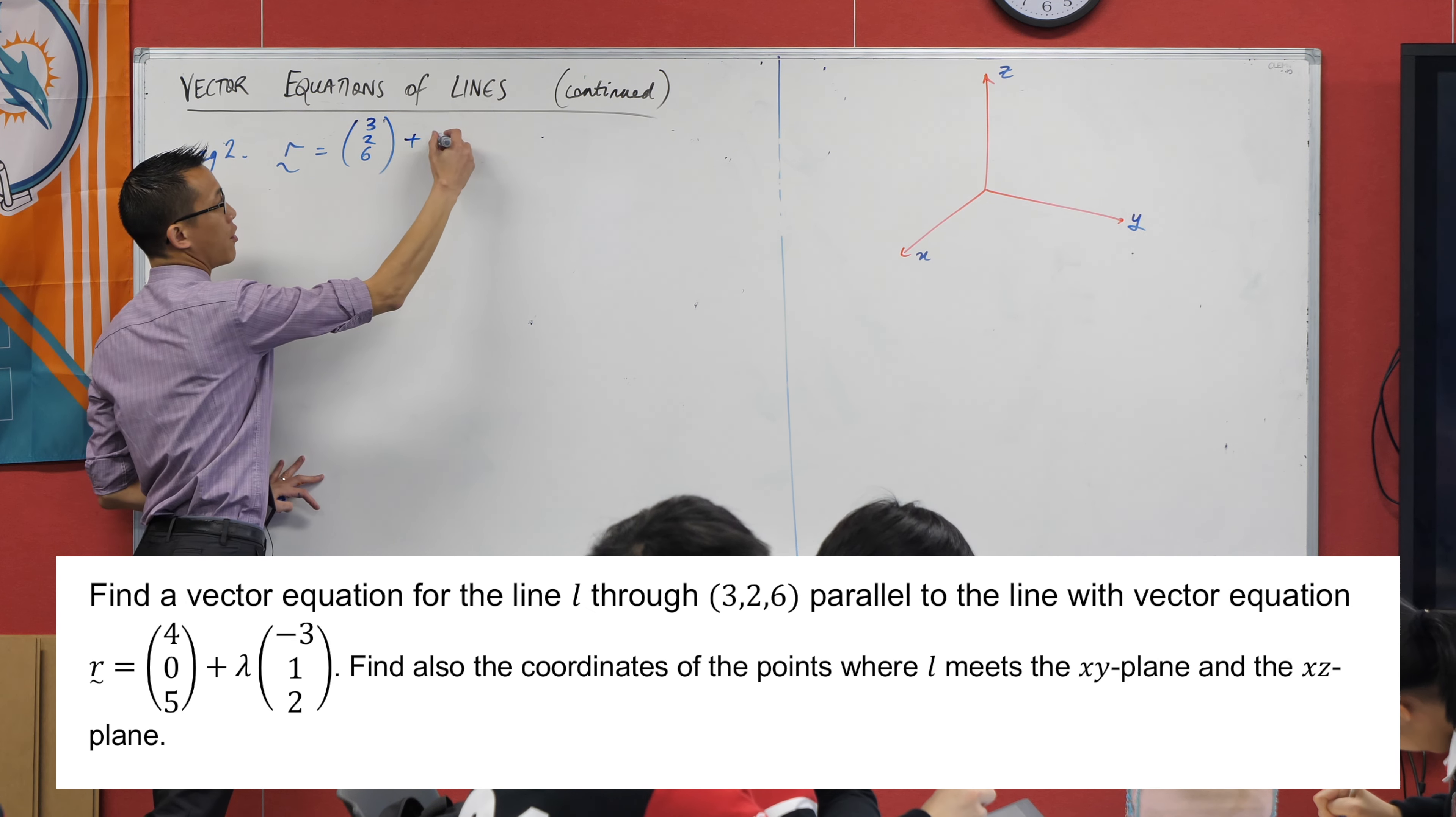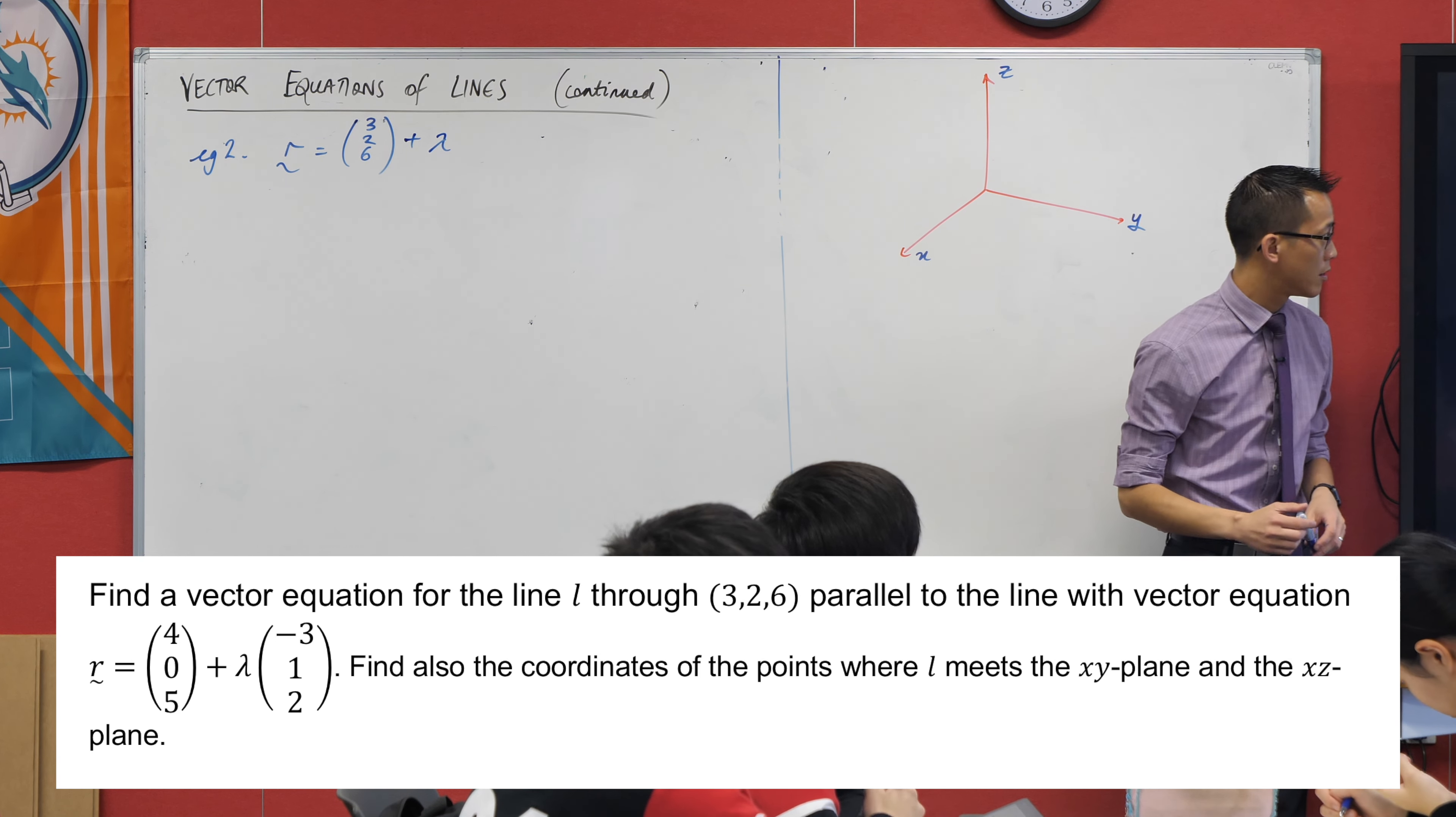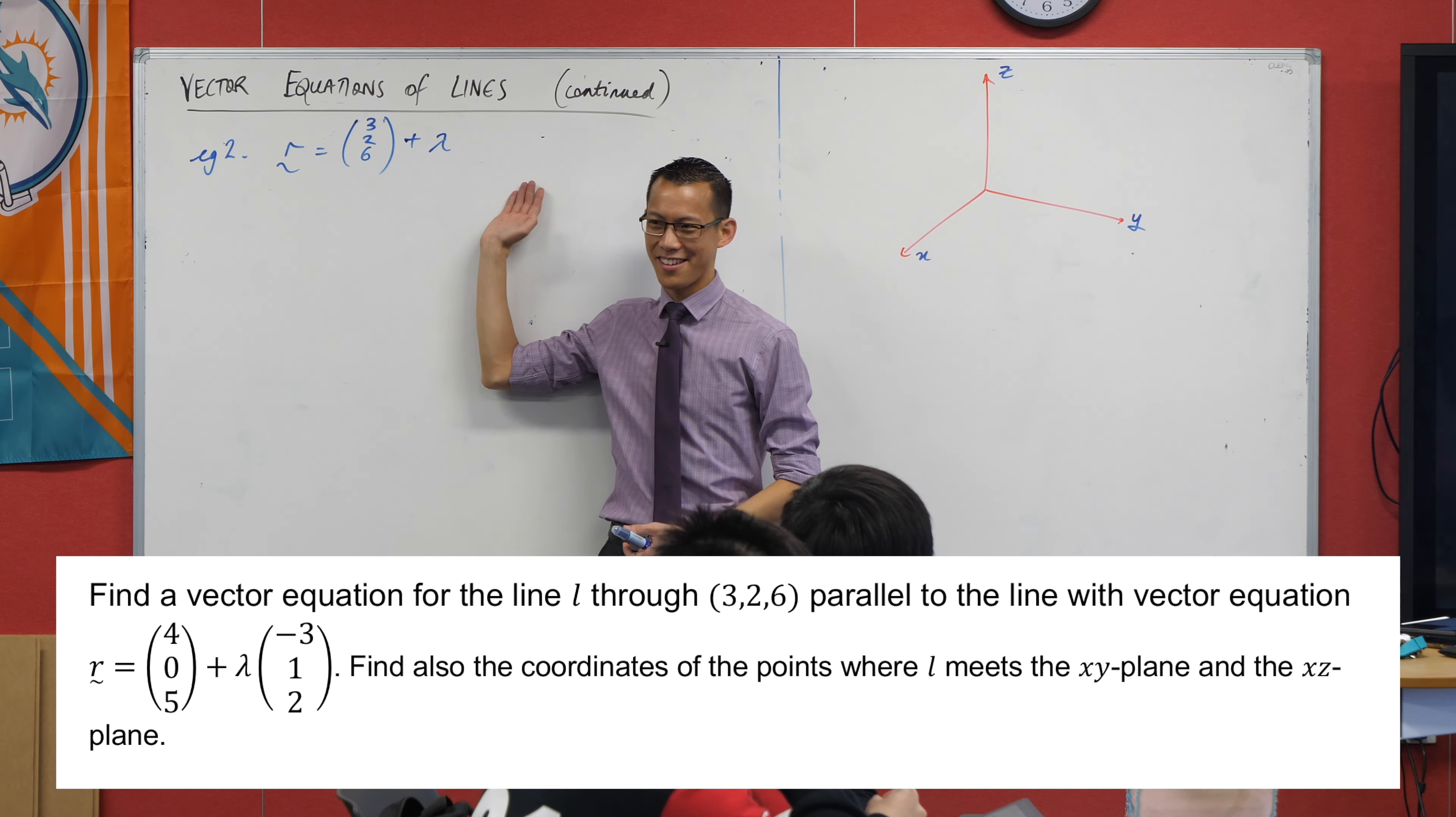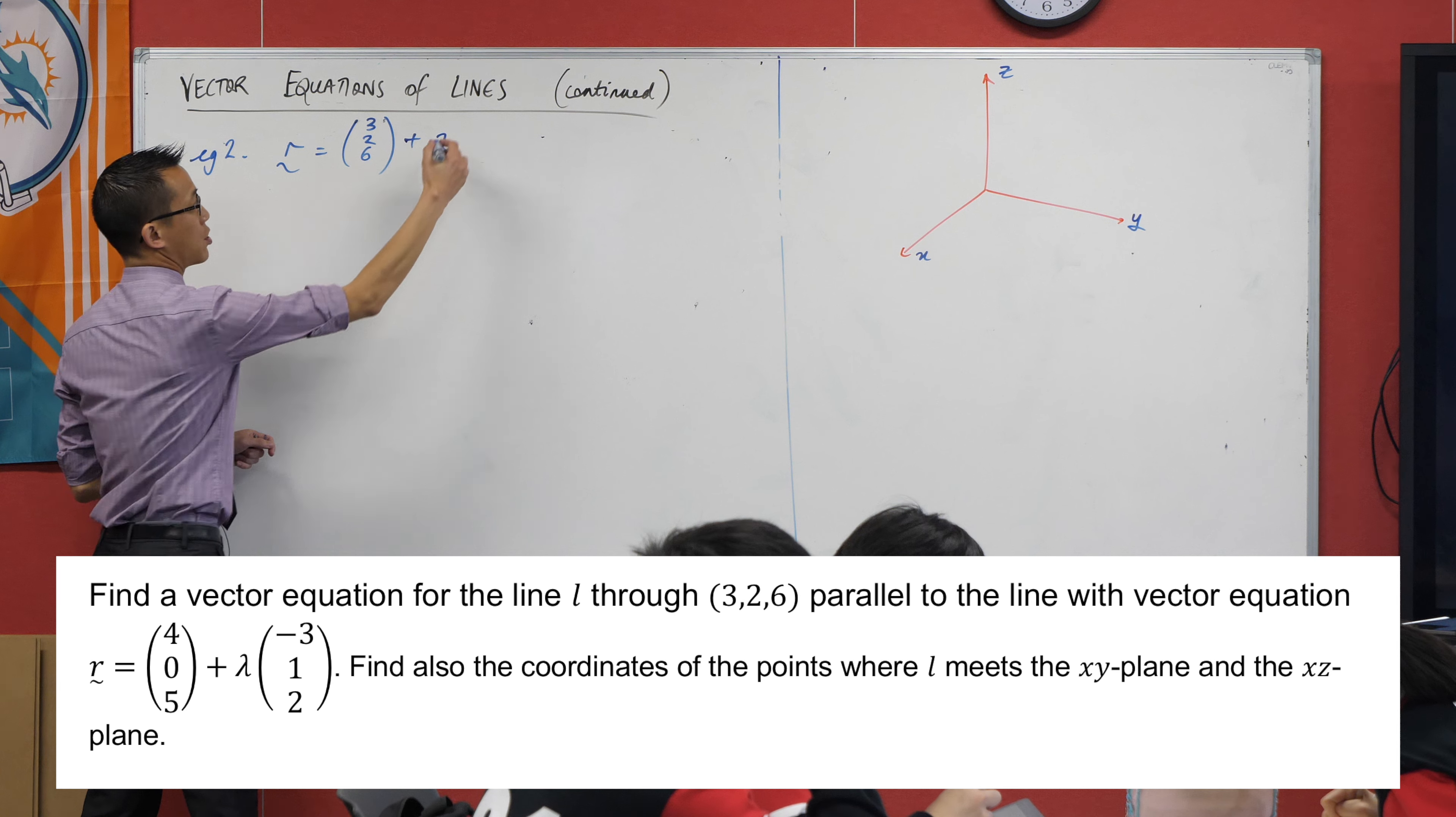Then I need to know which direction I am facing with. And again, the question helpfully tells us. But you need to see through which bit is relevant. Can anyone help me out? We have two choices. The direction vector I want here is going to match, or the easiest way, is just to match the direction vector of the other line, which in this case is negative 3, 1, 2.